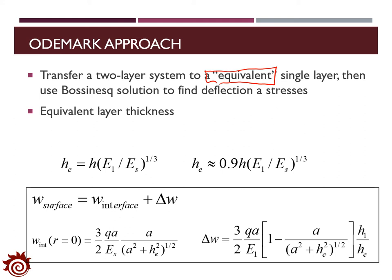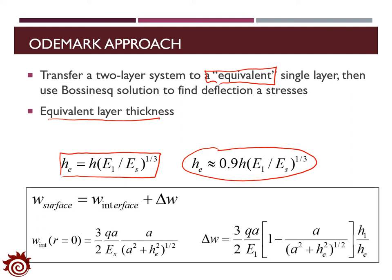The most important parameter for the Odemark approach is the equivalent layer thickness, estimated by the equation here. For the two-layer system, in order to find the more accurate equivalent thickness, we have to apply the second equation with the correction factor. With the equivalent layer thickness, we can identify the deflection at the surface and bottom of the pavement structure.